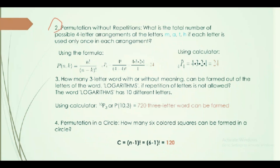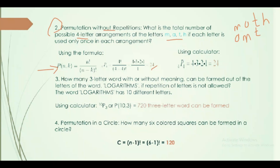The next example is permutation with repetition. What is the total number of possible four-letter arrangements of the letters M, A, T, H? You can arrange the letters with repetition allowed, using order. So you can use M, A, T, H in various arrangements.